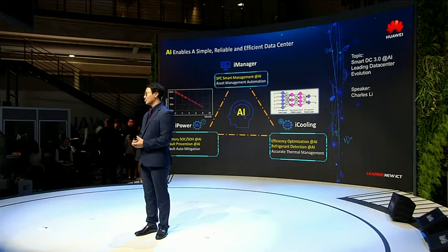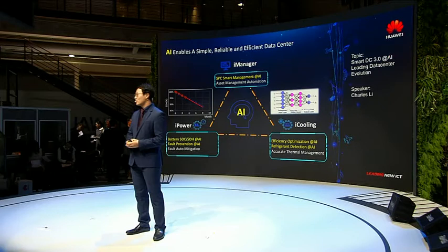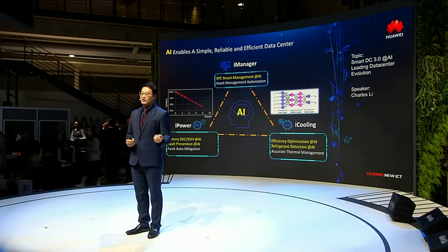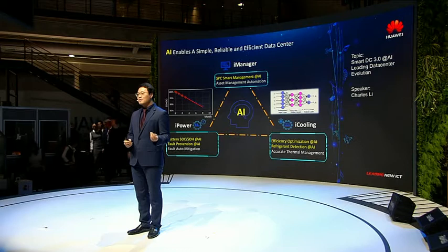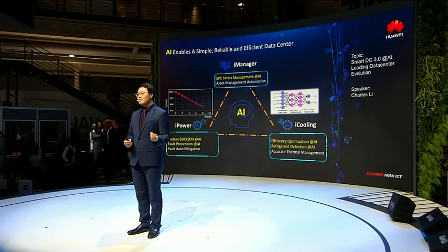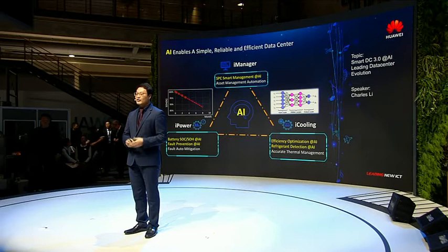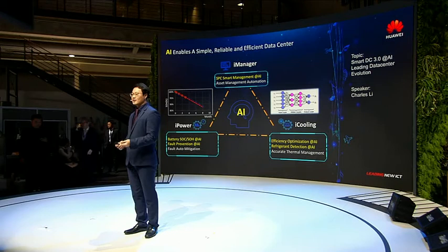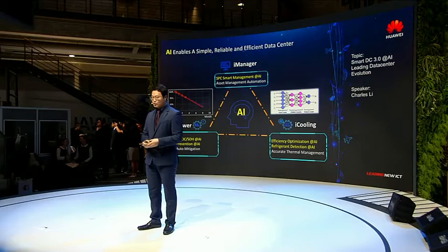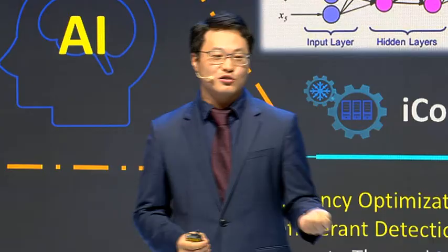How we do this is based on Heinrich's triangle: every major accident has 29 minor incidents behind it, 300 missed faults behind those, and 1,000 deviations behind that. So if you know all the information in advance, you can prevent the minor accidents and therefore also prevent major accidents in your data center.